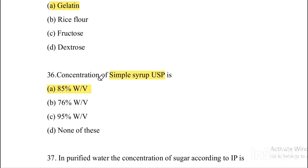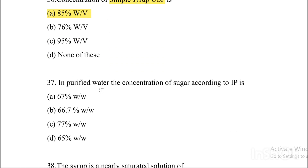Next question. Concentration of simple syrup USP is — Option A: 85%. Option B: 76%. Option C: 95%. Option D: None of these. Answer is Option A, 85%.